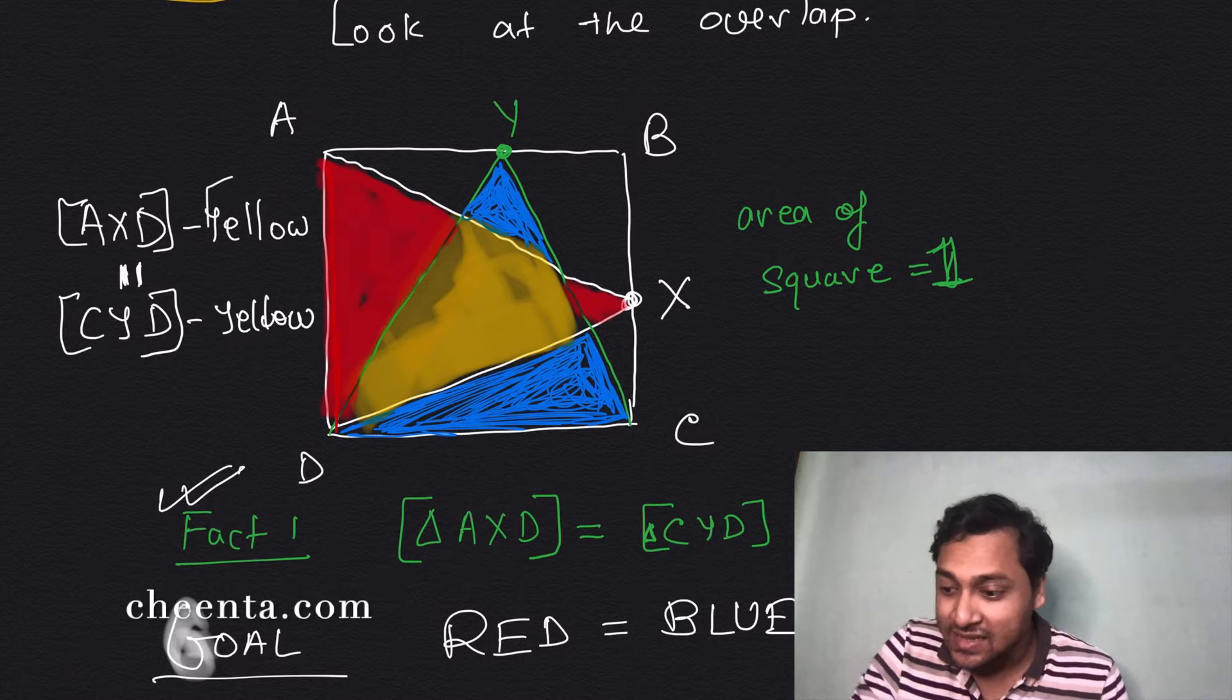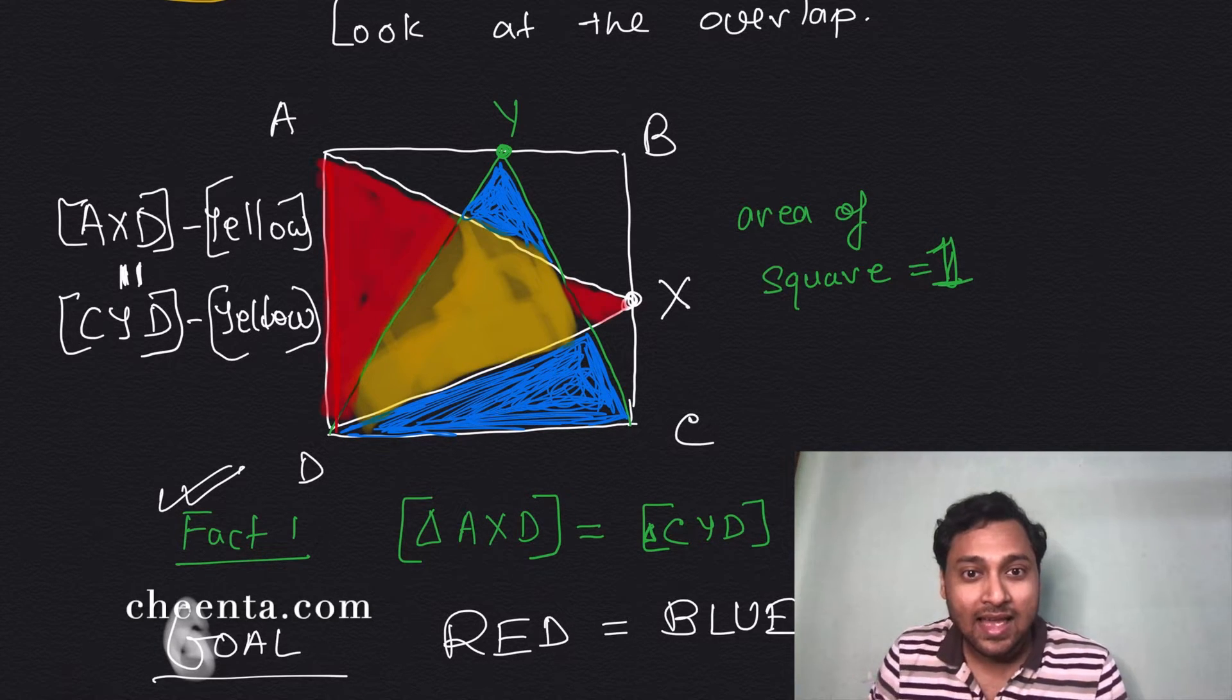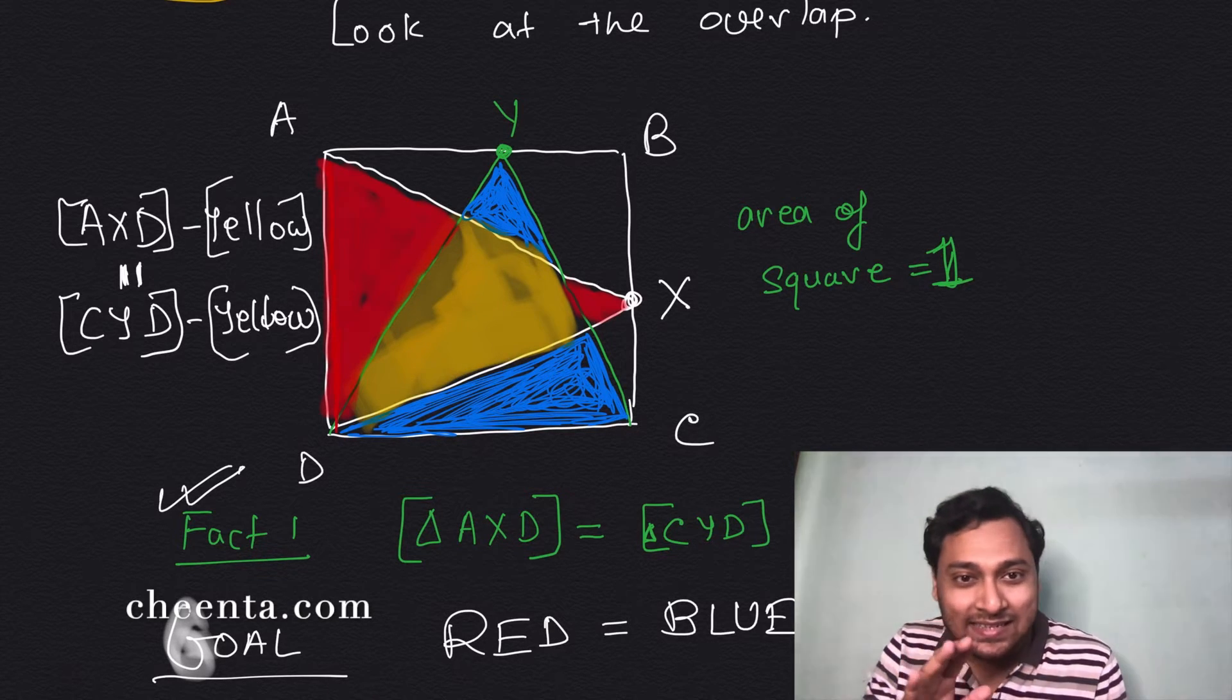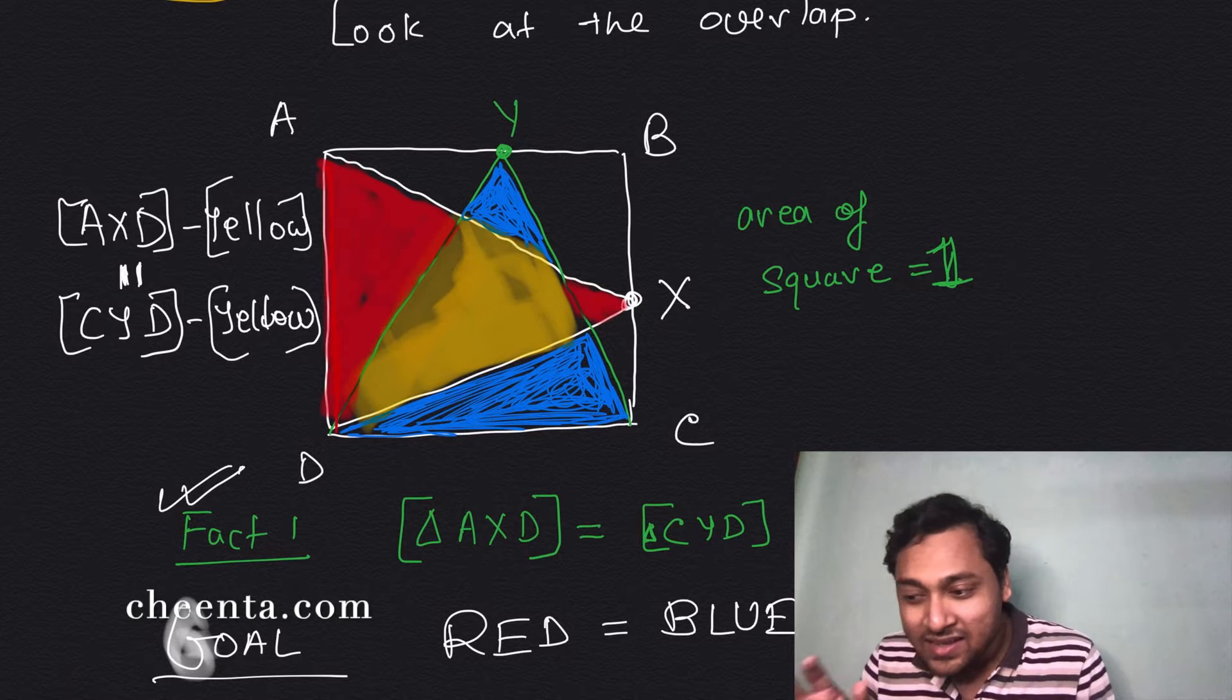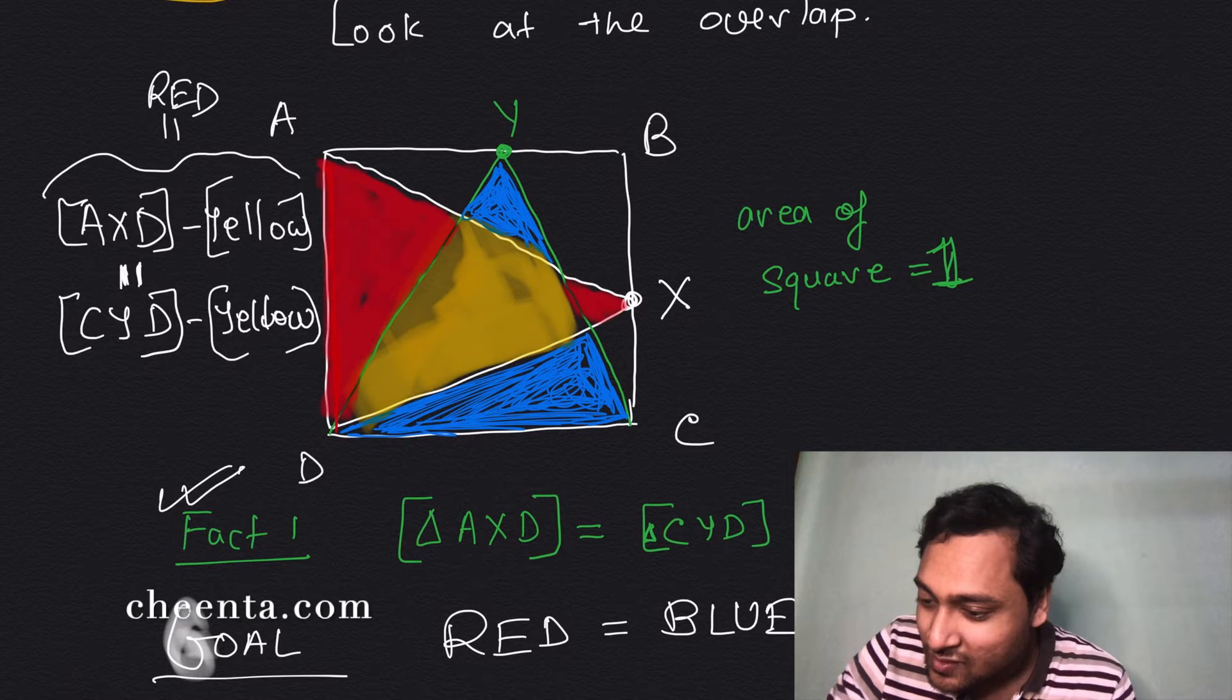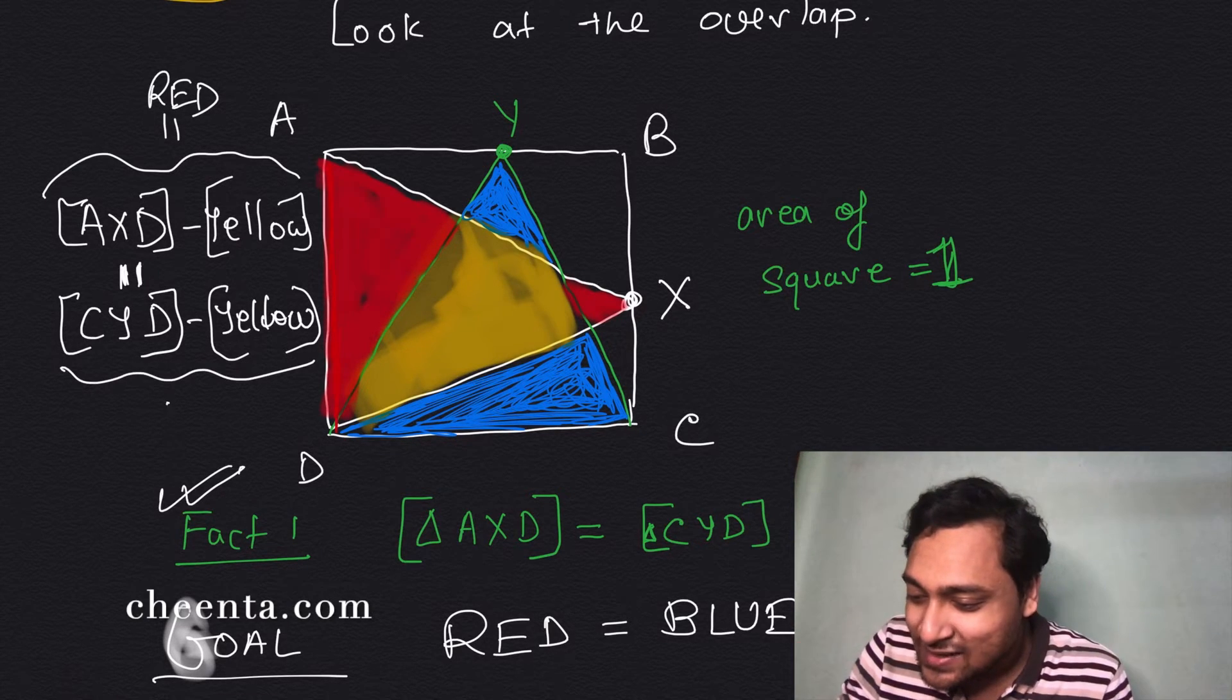Now notice that AXD minus the yellow, this is just red. And CYD minus the yellow, that's blue.